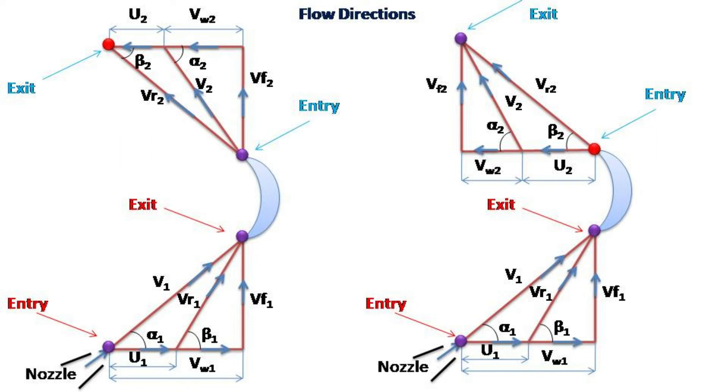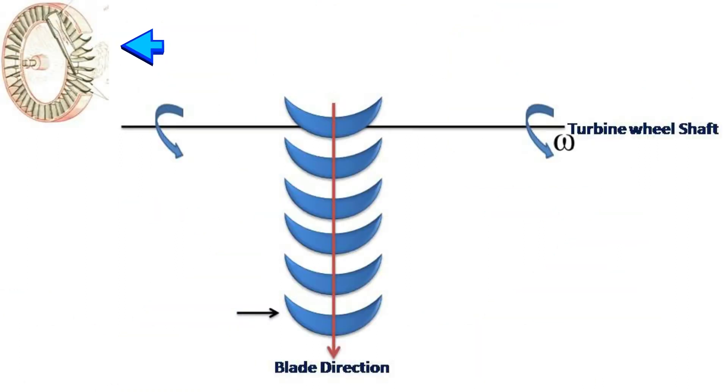The same concept of velocity triangles can be understood in another way. You can see a 3D diagram of turbine at the left top corner of the page and its front view as shown at the center.